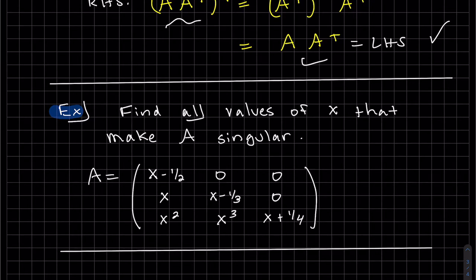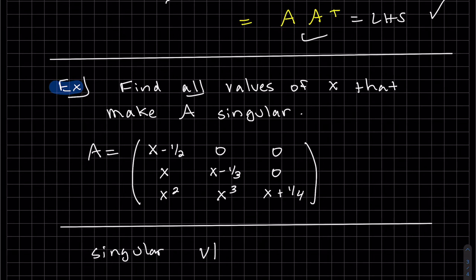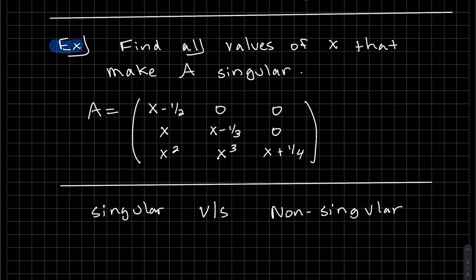Do you guys remember what singular means? The way I remember it, there's singular versus non-singular. Again, my little mnemonic device here. Non-zero versus zero, meaning a row of zeros. Singular has a row of zeros. Non-singular is one solution. This is many solutions. Infinite. Well, in order to have infinite solutions, you have to have a row of zeros in a three by three.